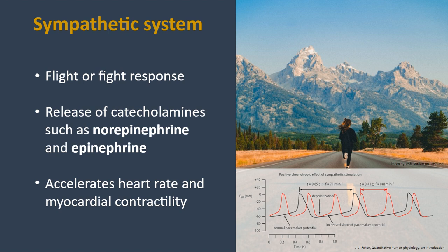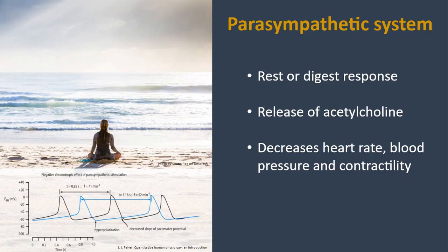The sympathetic system is known as the fight-or-flight response — every time you exercise or require extra energy and oxygenation, the sympathetic system activates, releasing catecholamines such as norepinephrine and epinephrine, accelerating heart rate and myocardial contractility to meet energy demands. On the contrary, you have the parasympathetic system, also known as the rest-or-digest response. When you're relaxed, sleeping, or calm, it releases acetylcholine and decreases heart rate, blood pressure, and contractility.